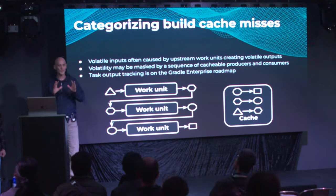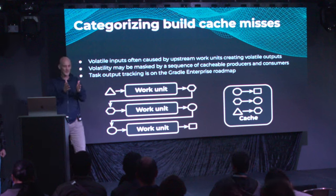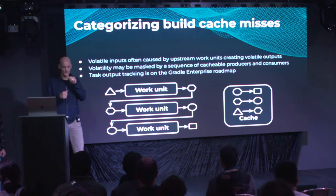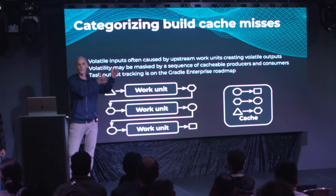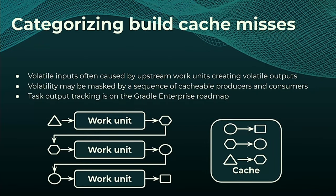Before looking at how to contain those inputs, keep in mind: if you look at a task or goal and you don't have a hit, often that task is not the culprit — the culprit is upstream. If you see no hits for compilation based on generated source code, it might be because your code generator creates non-deterministic output. The root of the problem is not necessarily where you don't get the cache hit.